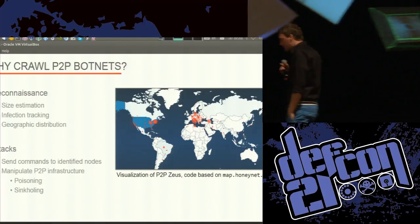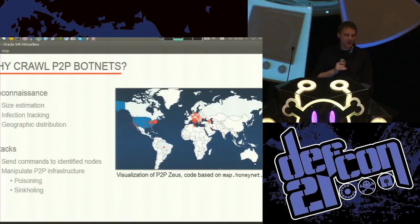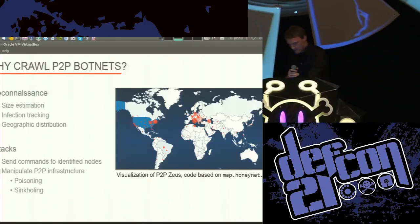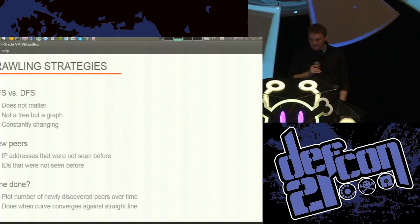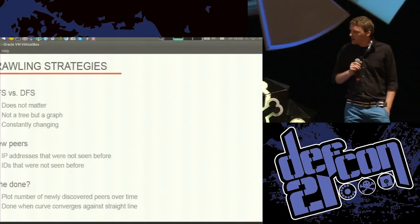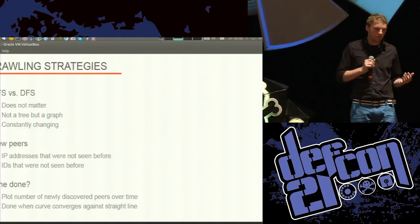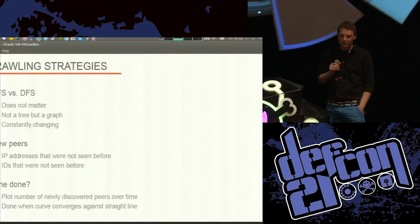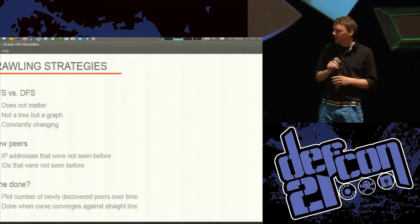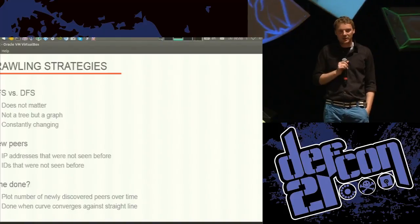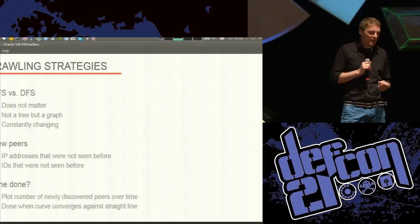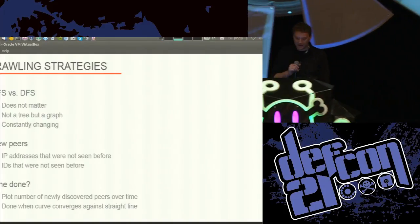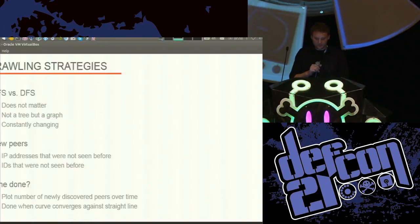Ideally, you might be able to sink the whole thing by replacing all legitimate entries in the peer list with your own ones, having all peers talking to your own machines, meaning nobody else has access over them anymore. If you think about crawling strategies, you might ask whether to implement depth-first search or BFS — but it doesn't really matter. It's not a tree, it's a graph, and it's dynamic, changing all the time. So it doesn't really matter which nodes you start with — if you're fast enough, you'll hopefully learn the biggest part of the reachable machines.